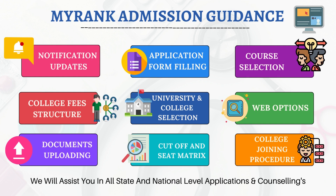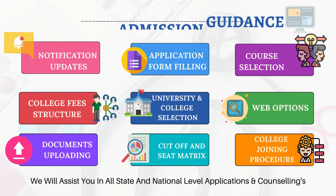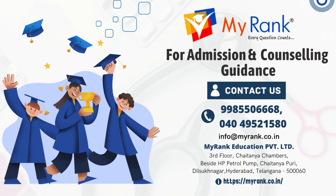MyRank will assist you in all state and national level applications and counselling, including application form filling, course selection, web options, university and college selection, college fee structures, documents uploading, and college joining procedure. We will also provide previous year cut-off and seat matrix, and regularly update you on the latest notifications. For admission and counselling guidance, please contact us at 99855-06668.